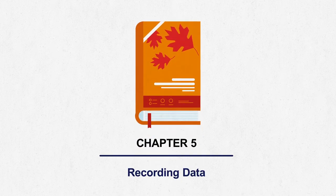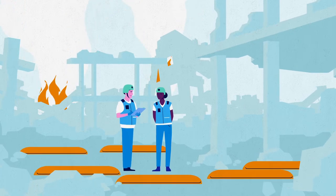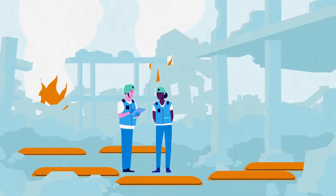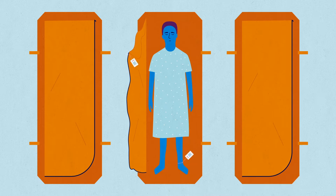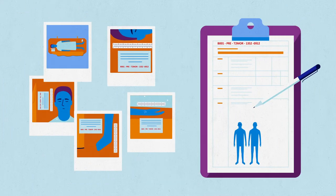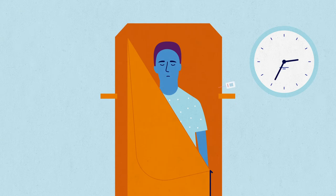Chapter 5: Recording Data. Permitted first responders have a critical role to play in early data collection. Once bodies have been recovered with a unique code allocated, data including photographs must be collected immediately, if possible safely at the scene, before valuable opportunities are lost and the body becomes unrecognizable.